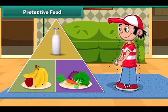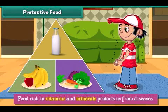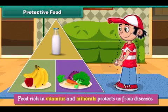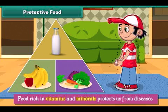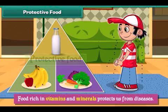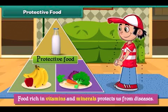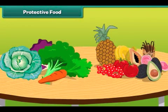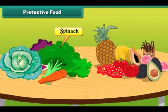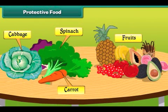Food rich in vitamins and minerals protects us from diseases. Therefore it is called protective food. Green leafy vegetables such as spinach and cabbage, carrots and fruits have lots of vitamins and minerals.